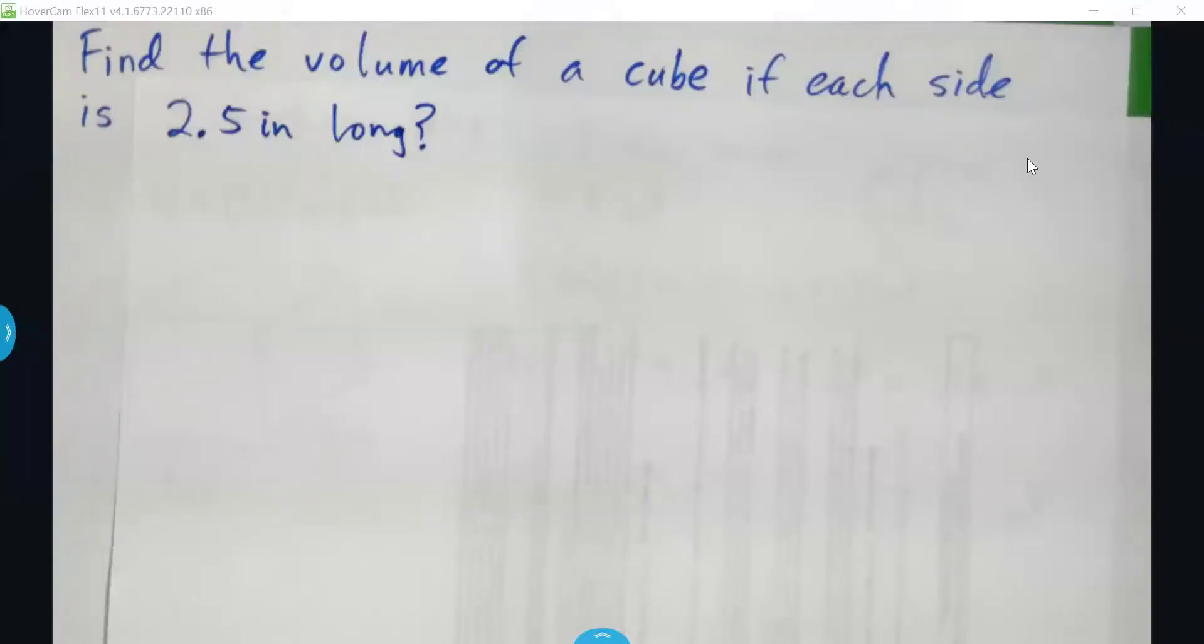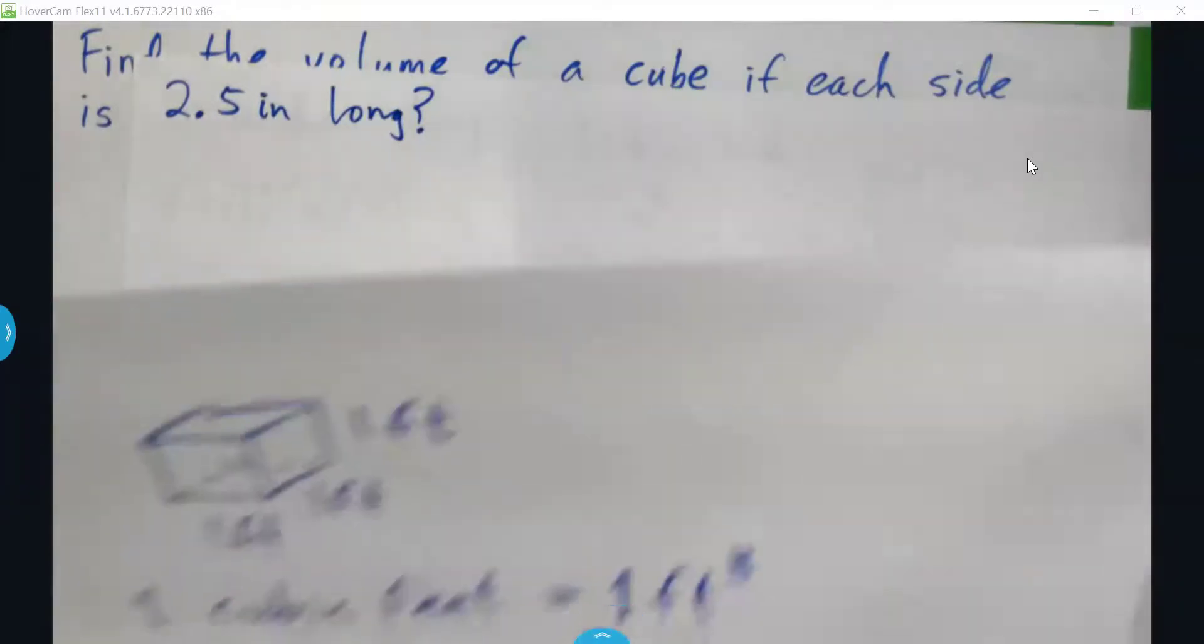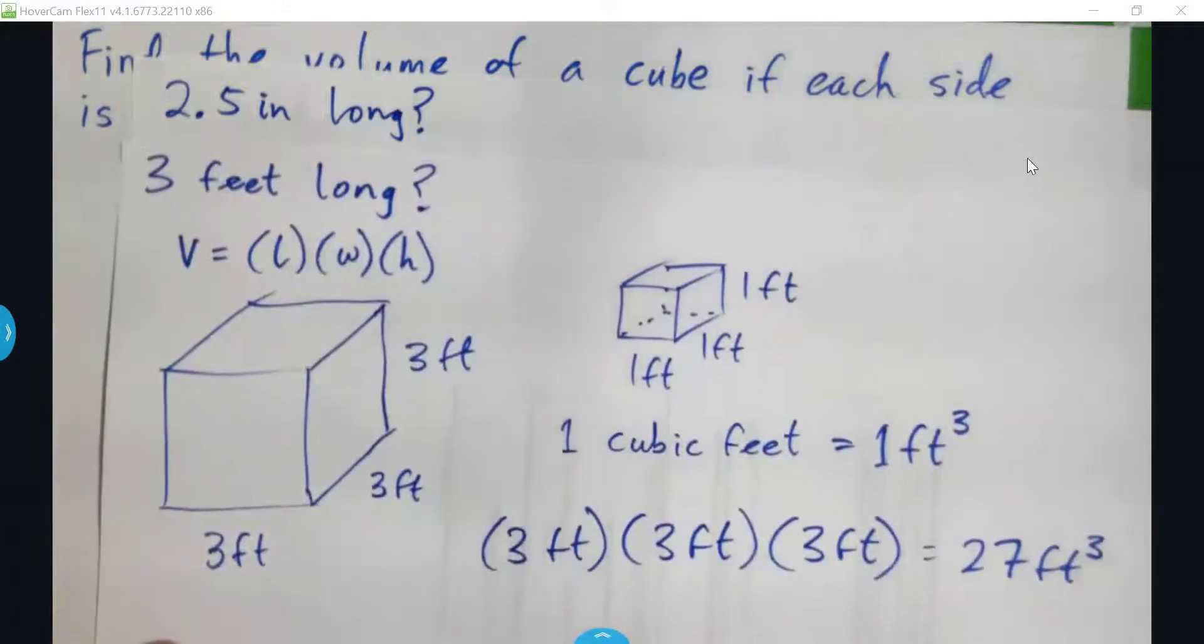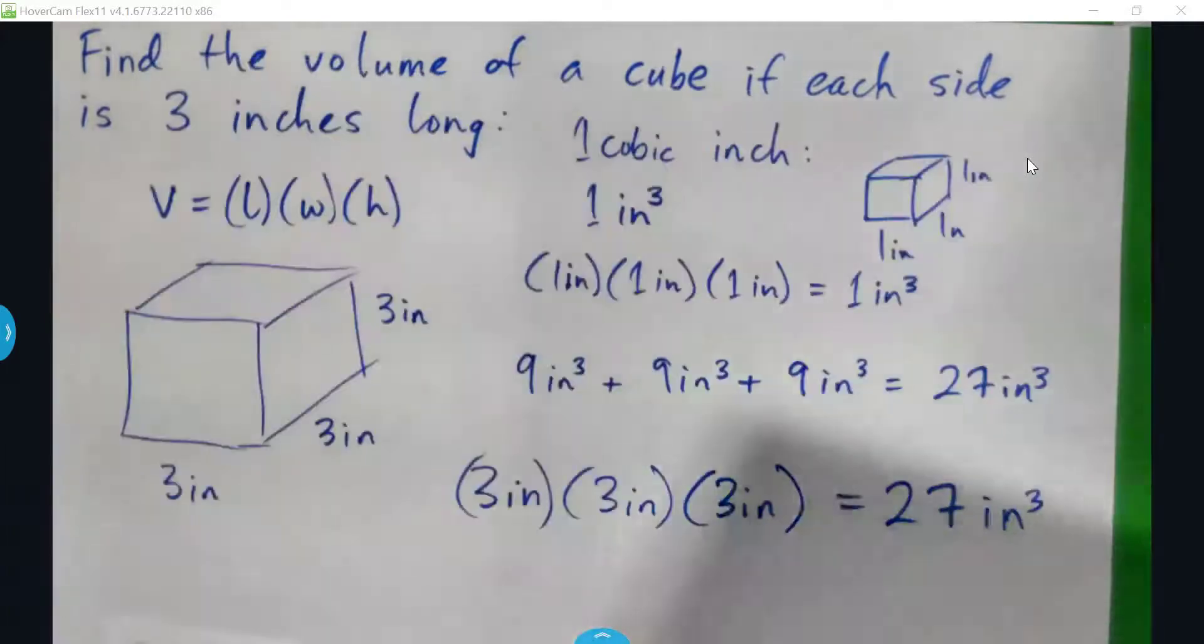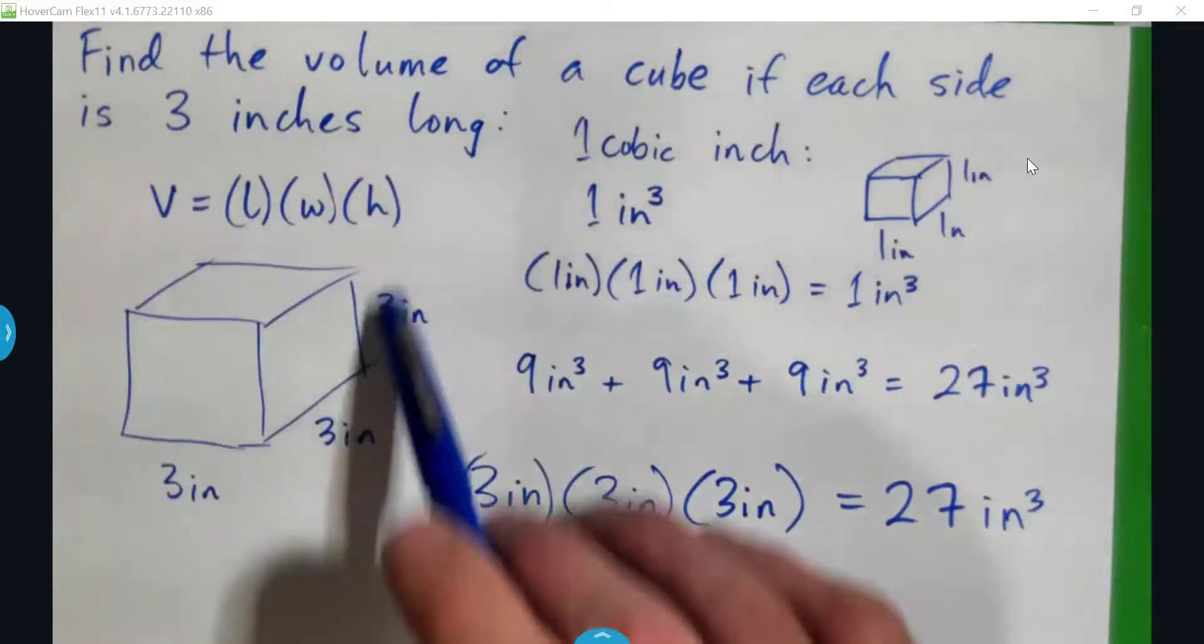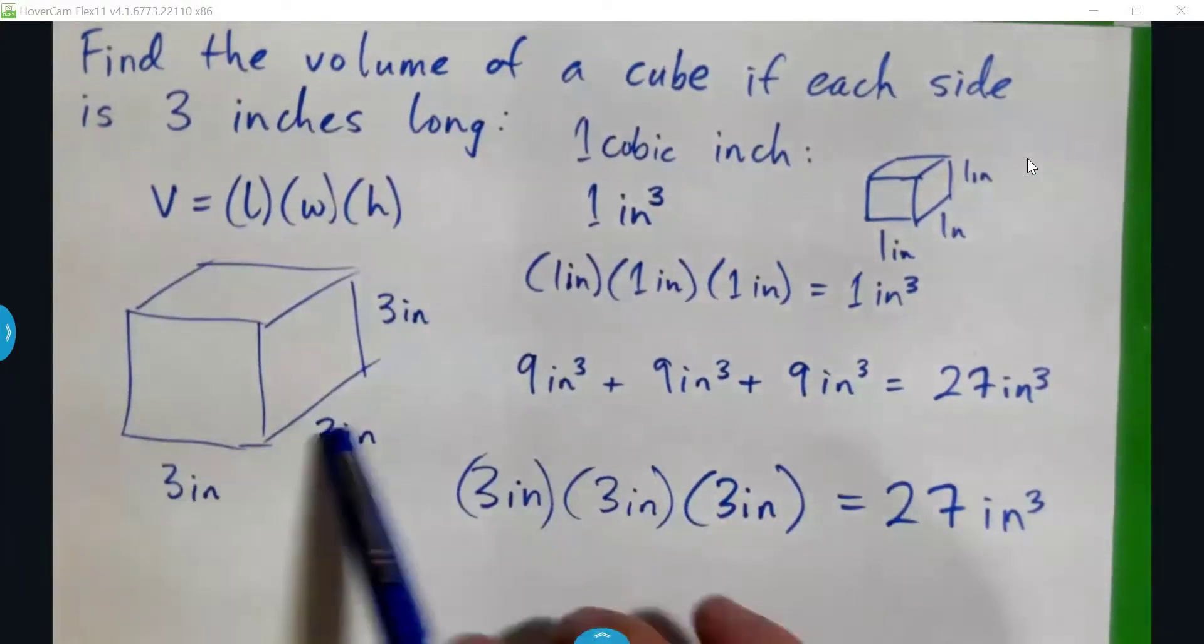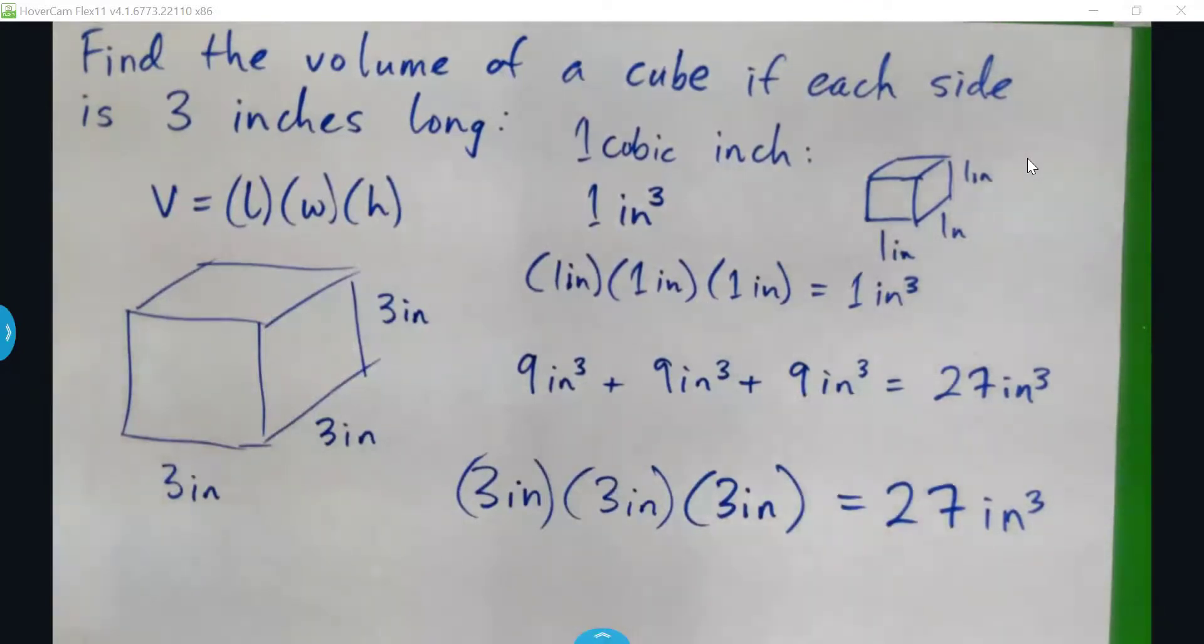All right, so here we're going to find the volume of a cube if each side is 2.5 inches long. And it is the same concept as we looked at before, where we looked at, say, when you had a cube that was 3 inches on each side, that became 27 cubic inches. That was kind of like our Rubik's cube, right?